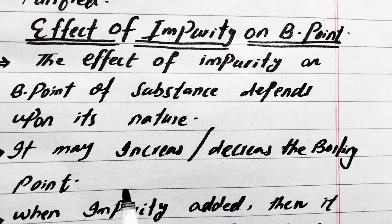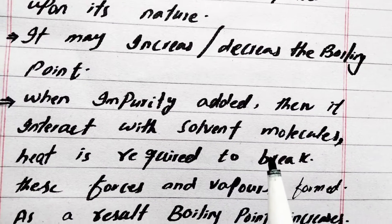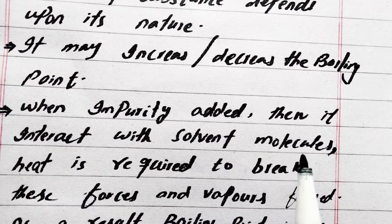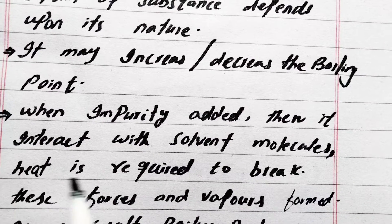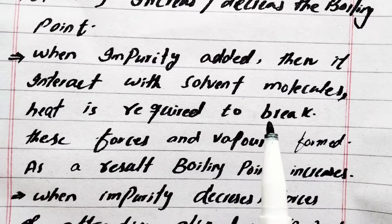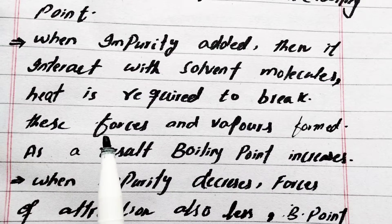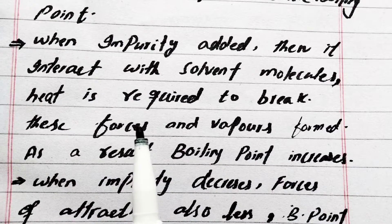When the impurity is added, it interacts with the solvent molecules, so heat is required to break these forces and vapors are formed. As a result, boiling point increases when we add the impurity in the solvent.